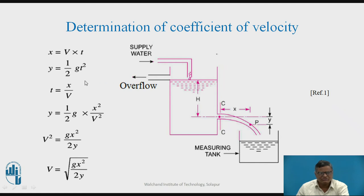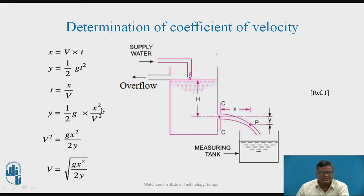For the horizontal distance x covered by the jet: x = v × t. For the vertical distance y, using the basic formula s = ut + ½at², where initial velocity u = 0 and acceleration a = g, we get y = ½gt². From the first equation, t = x/v. Substituting into the second: y = ½g(x/v)², which gives v² = gx²/(2y), and therefore v = √(gx²/2y). This is the actual velocity of the jet.